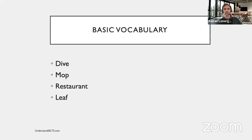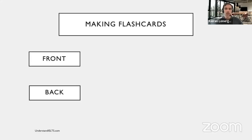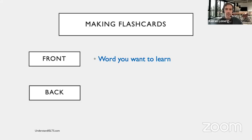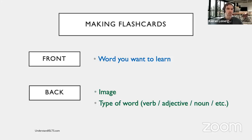You need to make the flashcards yourself, and then review them in Anki. A flashcard is just a small test with a question on the front and the answer on the back. On the front, you put the word you want to learn. On the back, you put an image of that thing. I also want you to include what type of word it is — verb, adjective, noun, etc. — and a personal connection that you have with that word.